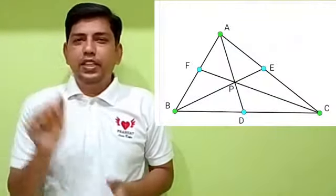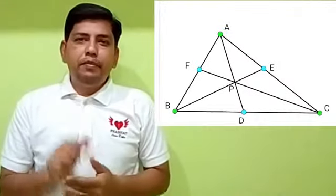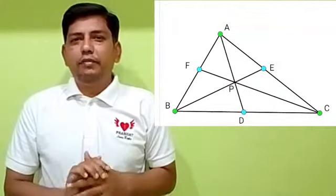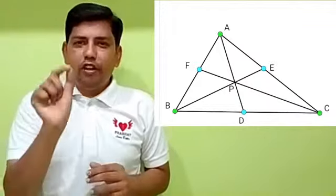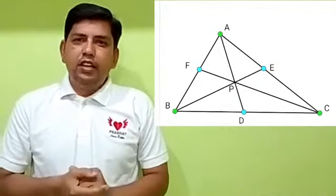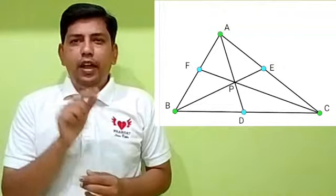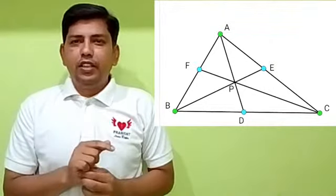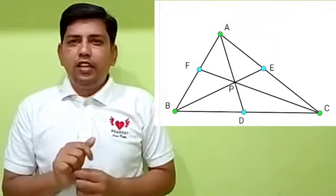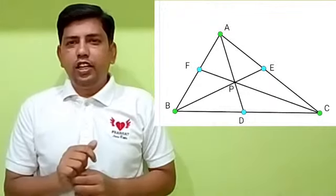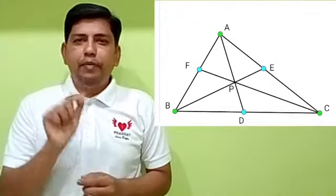Van Aubel's theorem says that in a triangle A, B, C, if A, D, B, E and C, F are three cevians meeting at the point P, then AF/FB plus AE/EC is equal to AP/PD.